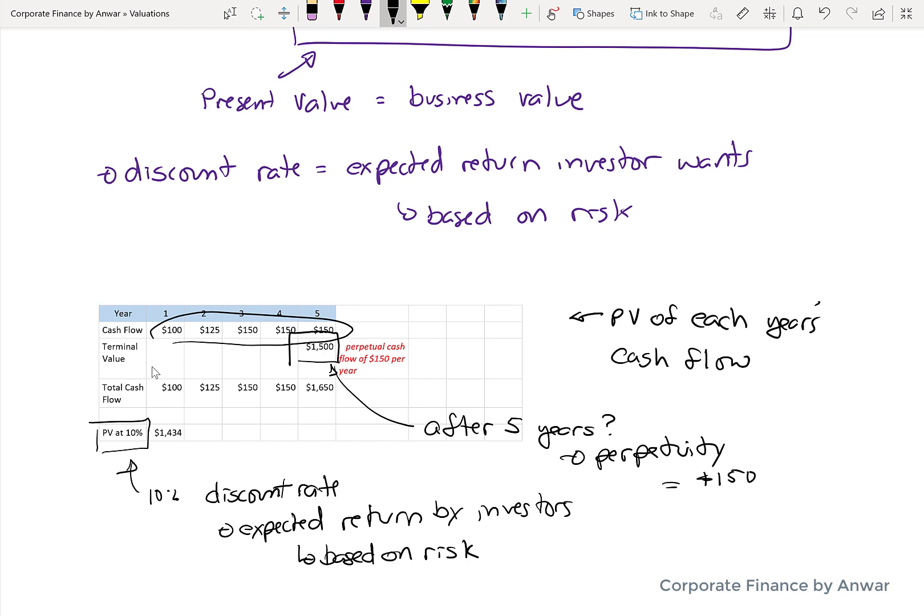And if that's the case, you just take 150 divided by the discount rate of 0.1, and it comes to a value of $1,500. Now, businesses don't last forever, but it's a proxy. So this is a way of doing it.